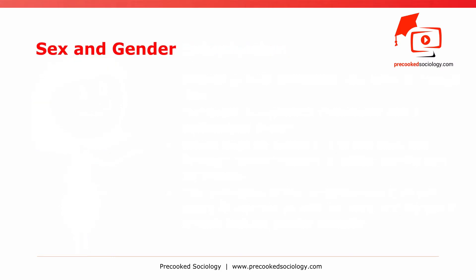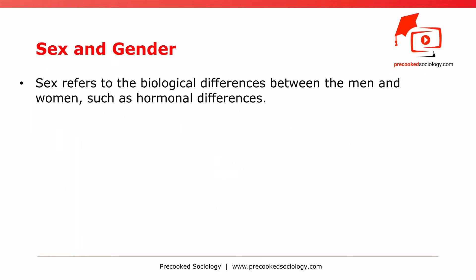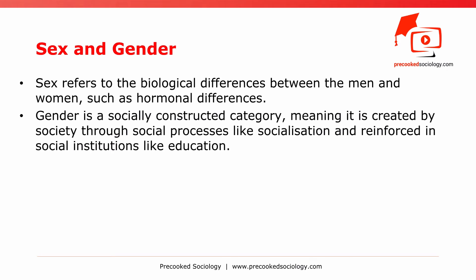For a liberal feminist, there is a big difference between sex and gender. Sex refers to the biological differences between men and women, such as hormonal differences. Gender, on the other hand, is a socially constructed category, meaning it is created by society through social processes like socialization, and reinforced in social institutions like education.